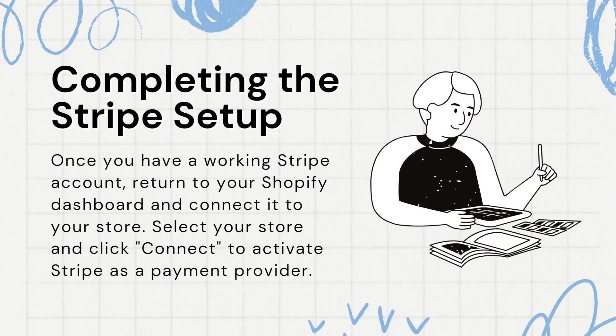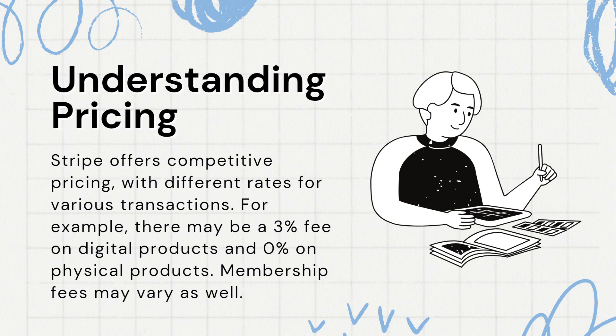Number 7: Understanding Pricing. Stripe offers competitive pricing with different rates for various transactions. For example, there may be a 3% fee on digital products and 0% on physical products. Membership fees may vary as well.